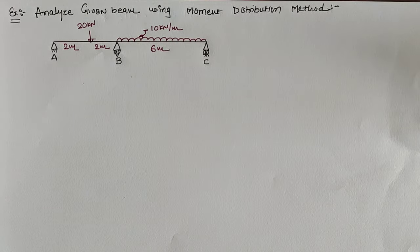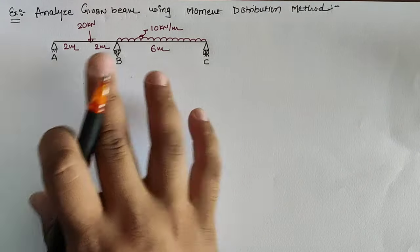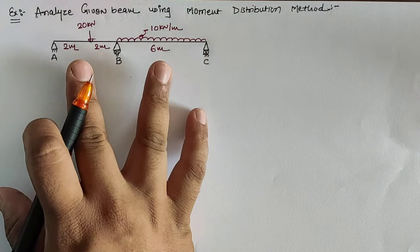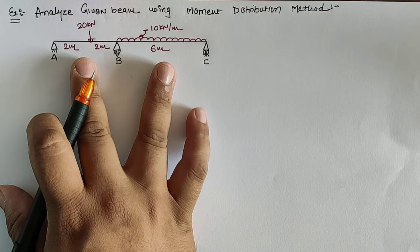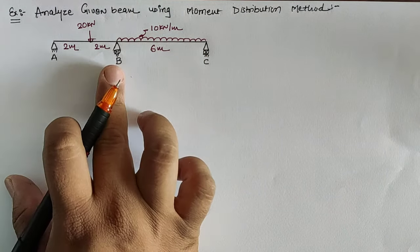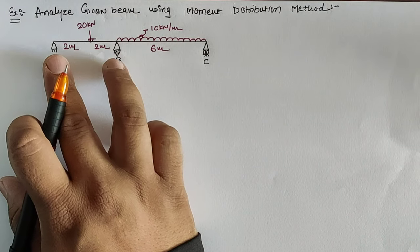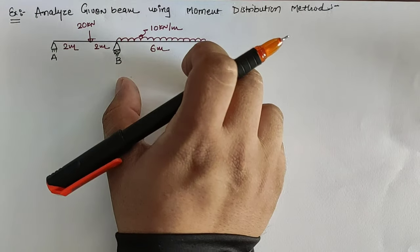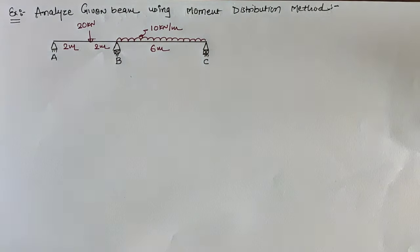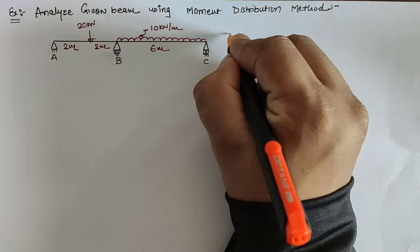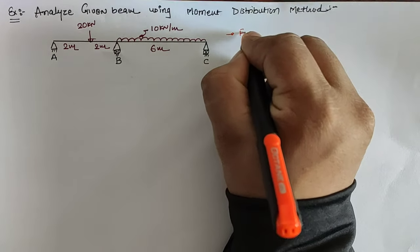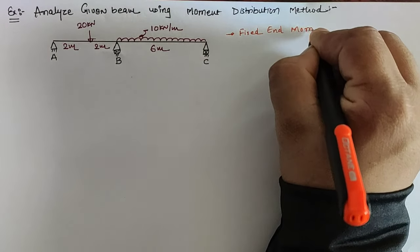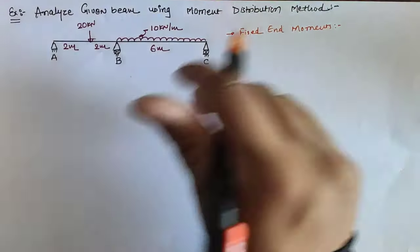Hello friends, today we are going to analyze a given beam using the moment distribution method. The given beam is a two-span continuous beam having each support as hinge and roller, in which the first span length is 4 meters loaded with a center point load, and the second span is loaded with UDL over the entire span. The first step is to find out the fixed end moments.